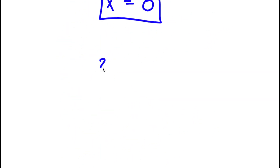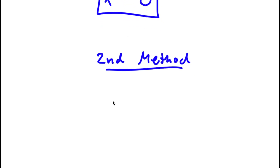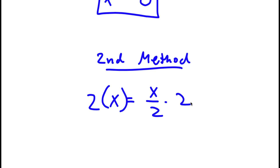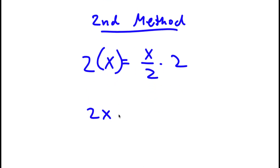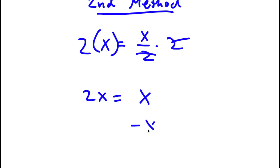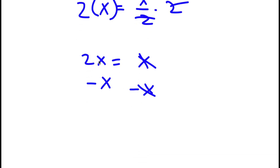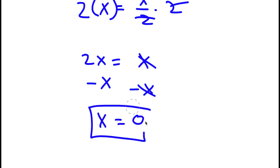I have a second method of solving this problem. I first start with x is equal to x over 2. This time, instead of subtracting x over 2 on both sides, I'm going to multiply 2 on both sides. So I have 2 times x is equal to x over 2 times 2. Well, 2 times x is simply 2x, and x over 2 times 2 — these two 2s cancel out, so I'll be left with x. So I have 2x is equal to x. Now I'm going to subtract x on both sides. These two cancel out, and I'll be left with 2x minus x, which is x, equal to 0. So x equals 0 again.